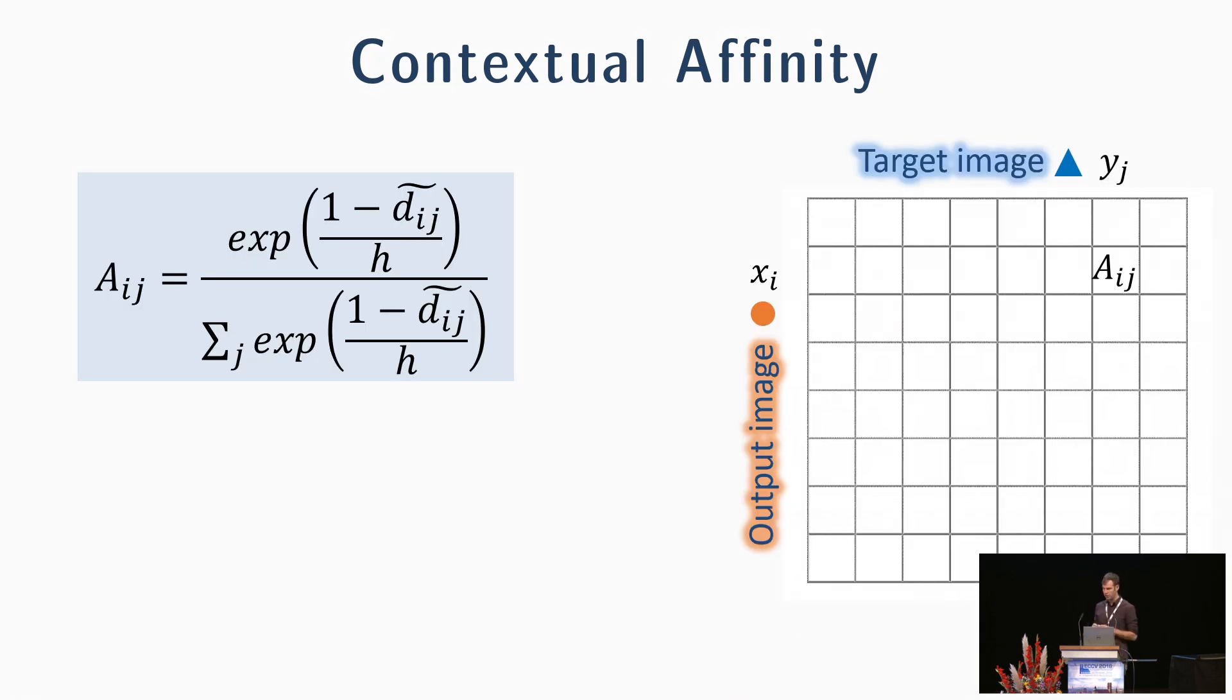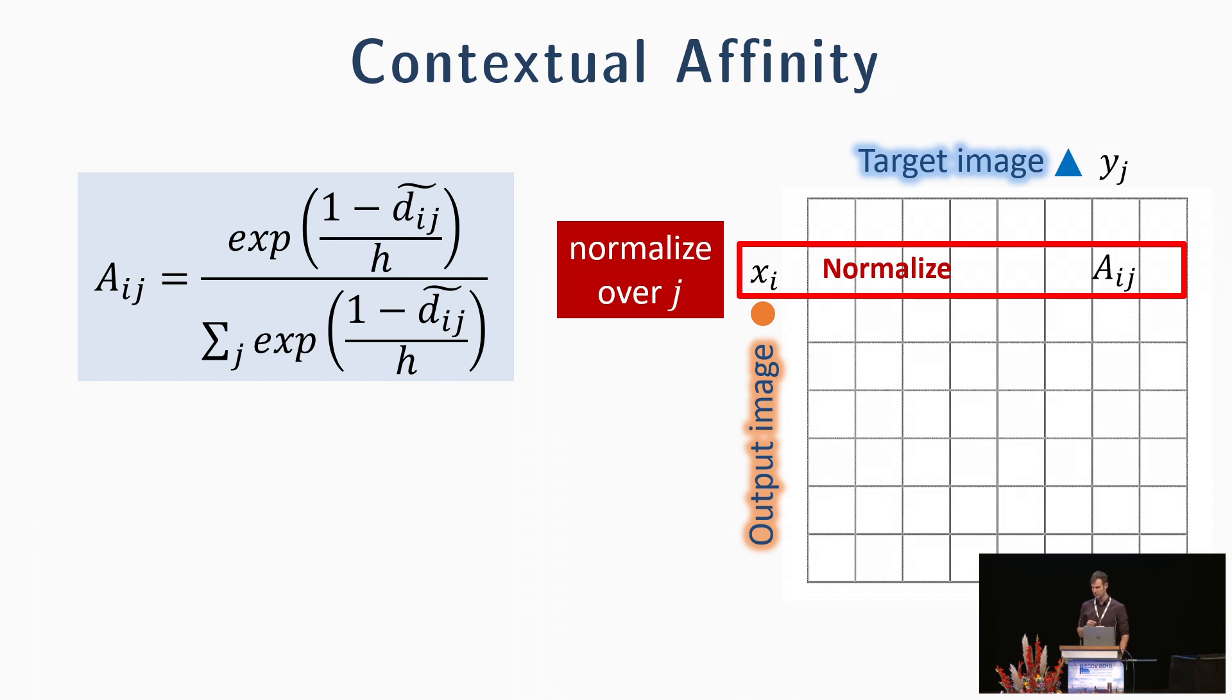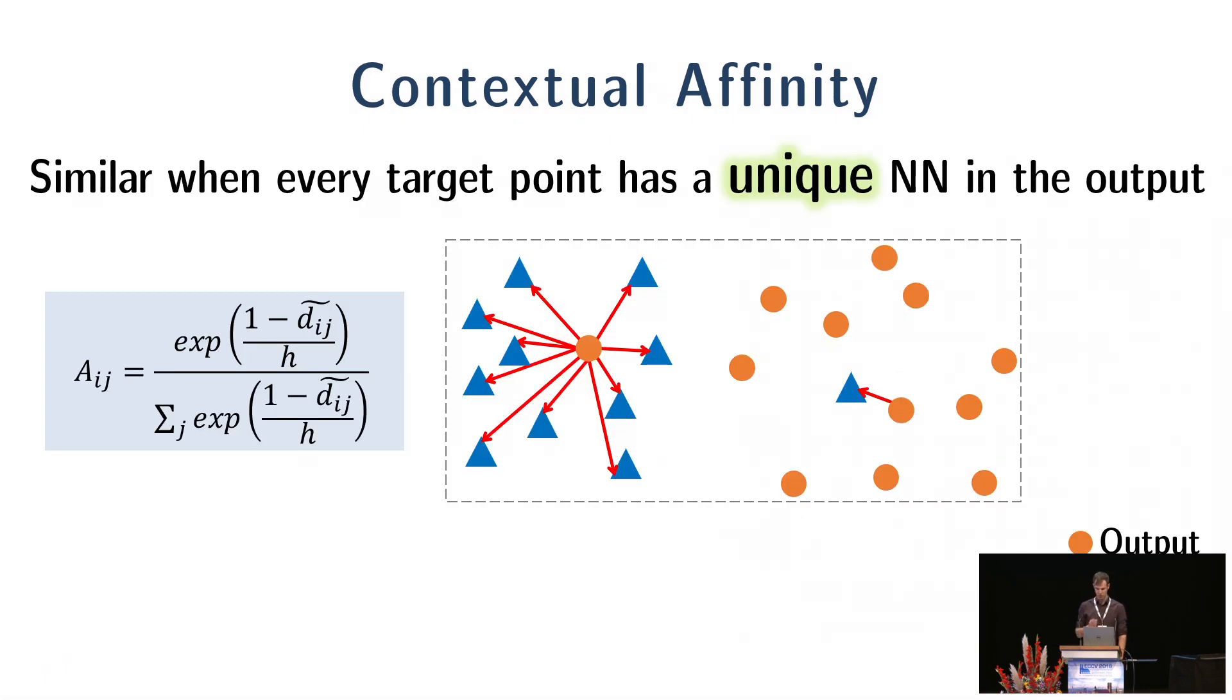To incorporate the context of each point, we use what we call contextual affinity. We consider the context by normalizing the affinities in a softmax manner. The normalization is done over each row in the affinity matrix.